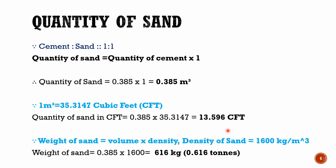Now, multiply the density of sand with volume to get the weight of sand in tons. Here, density of sand equals to 1600 kg per cubic meter. Therefore, weight of sand equals to 0.385 cubic meter multiplied by 1600, which equals 616 kg, or 0.616 tons.